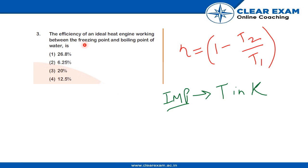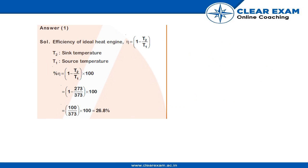And boiling point is 100, so 100 plus 273 is 373. So we'll just need to put the temperatures over here. So our freezing point is nothing but sink temperature and our source temperature is boiling point.